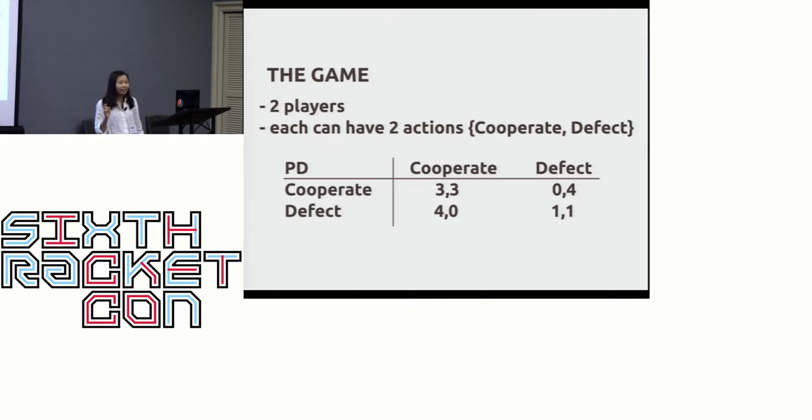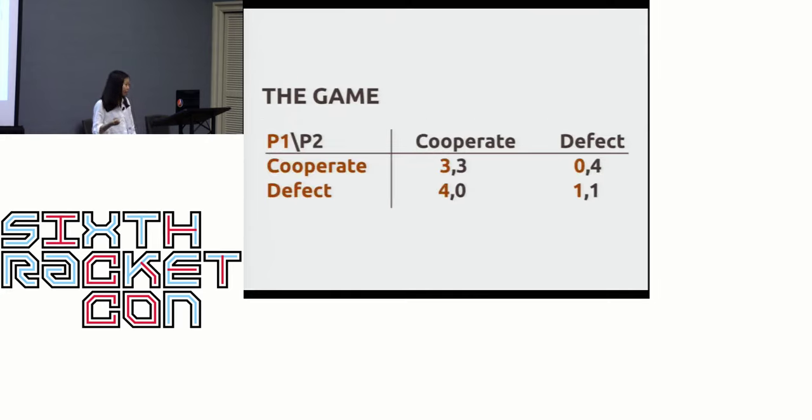And the defector will get four, and that payoff is called the temptation payoff. So how do we solve this game?